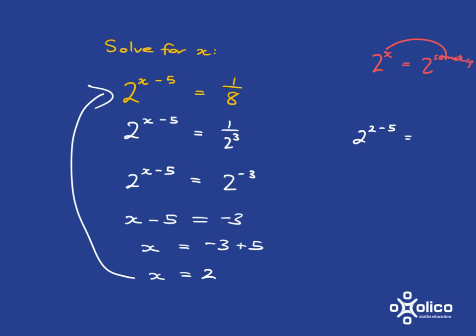2 to the 2 minus 5 is 2 to the negative 3. And 2 to the negative 3 is 1 over 2 cubed, which is 1 over 8. And that is what we had on the right-hand side. So we know that we've got our answer correct.